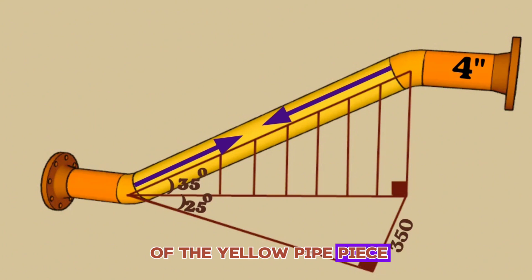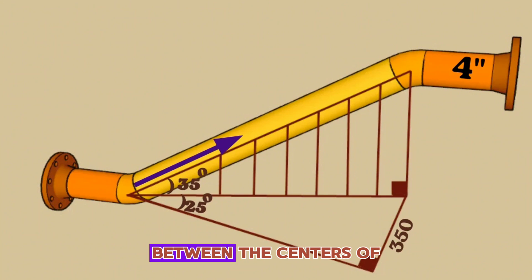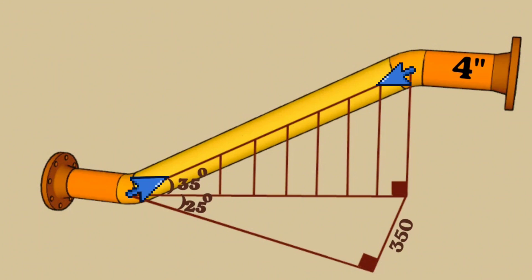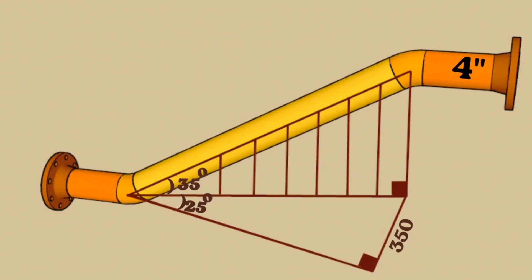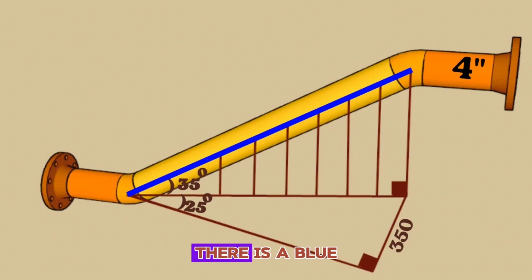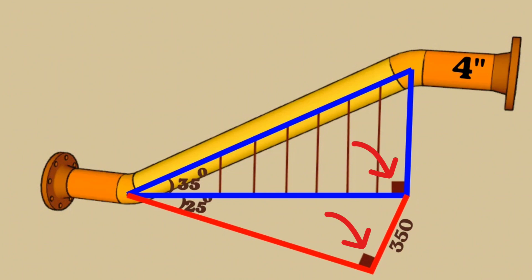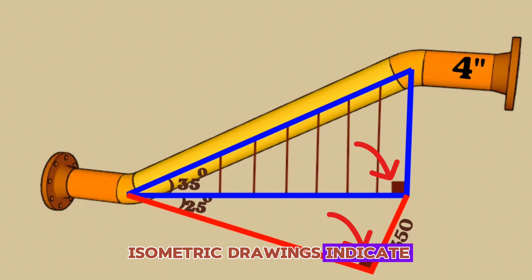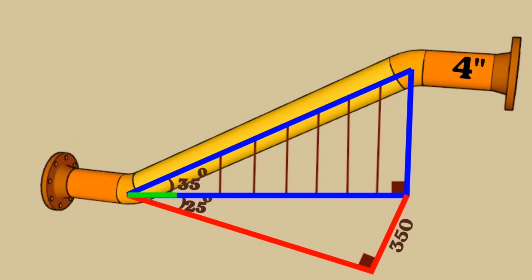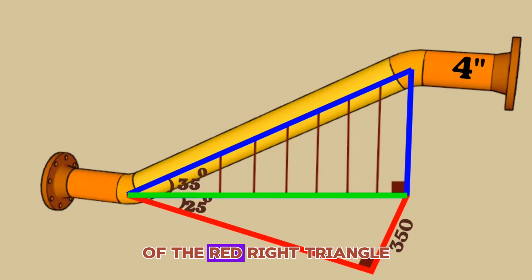To find the length of the yellow pipe piece, we first need to calculate the distance between the centers of the pipe elbows. In order to determine the distance between the centers of the elbows, we will use the two right triangles given in the drawing. Horizontally there is a red-colored triangle and vertically there is a blue-colored triangle. Such symbols in pipe isometric drawings indicate 90 degrees in the right triangles. The common green colored line is the hypotenuse of the red right triangle and at the same time the perpendicular side of the blue-colored right triangle.